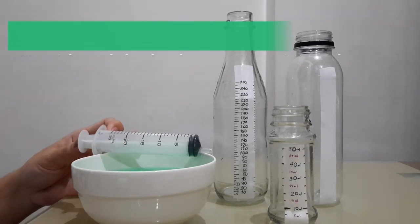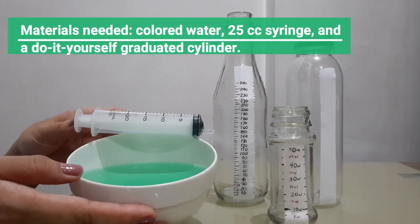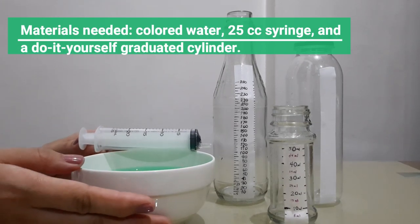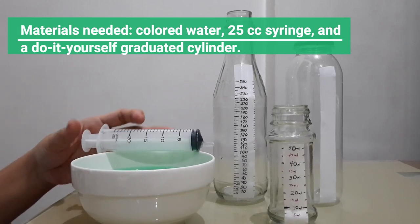Next, we will need the following materials: colored water, a 25cc syringe, and your DIY graduated cylinder.